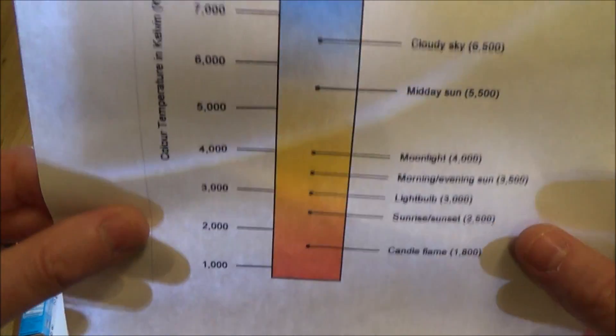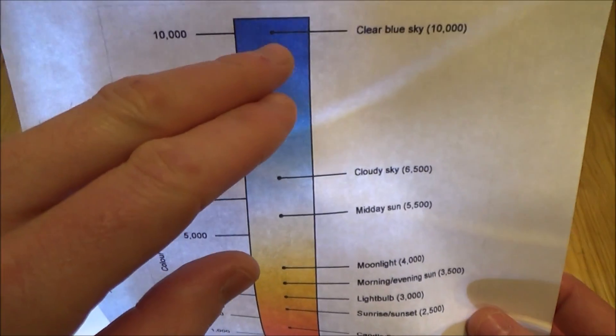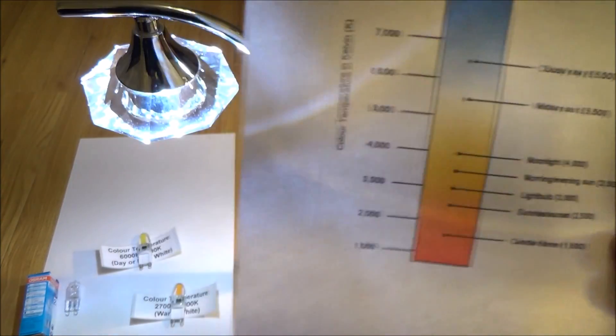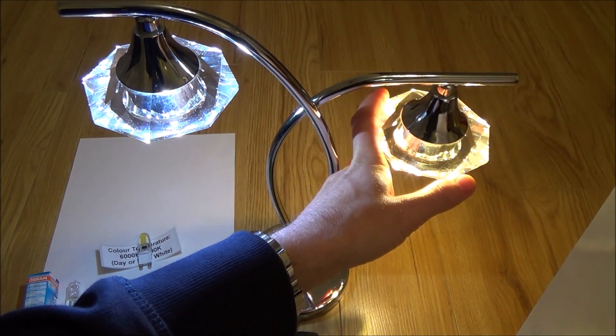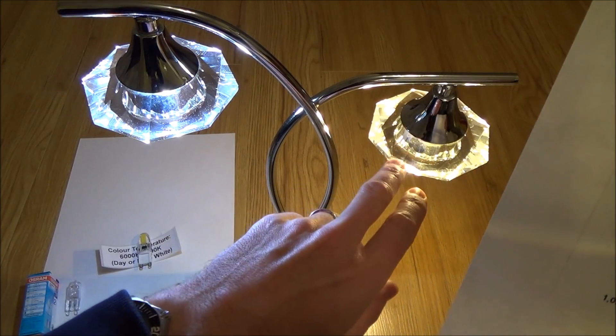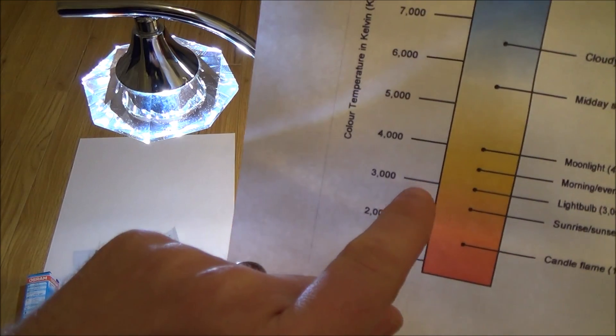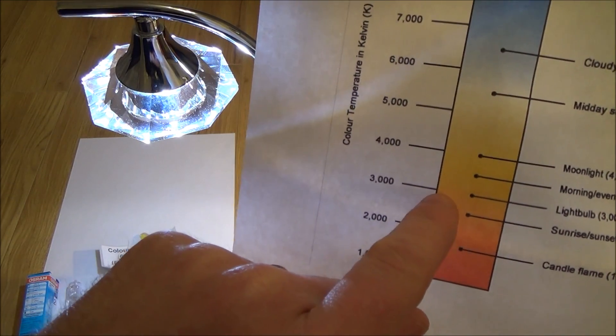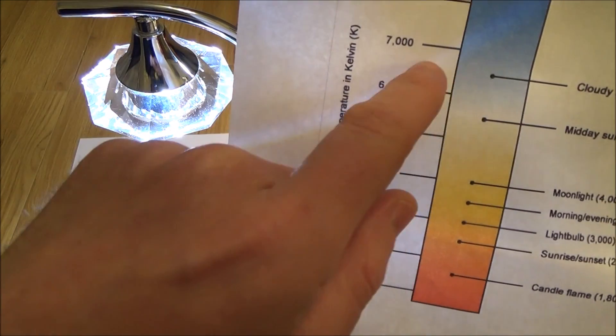So this is the Kelvin scale here, so further down is actually colder than higher up which is kind of the opposite of what we would think because generally speaking we call this a warm white and this a cold white and yet it's the opposite. I know because I've bought these LEDs that this one over here is 2700 temperature which is here and this one over here is between six and seven thousand which is all the way up here.